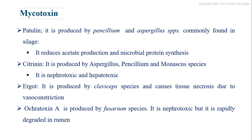Patulin is produced by Penicillium and Aspergillus spp., commonly found in silage; it reduces acetate production and microbial protein synthesis. Citrinin is produced by Aspergillus, Penicillium, and Monascus species and is nephrotoxic and hepatotoxic. Ergot is produced by Claviceps species and causes tissue necrosis due to vasoconstriction. Ochratoxin A is produced by Fusarium species; it is nephrotoxic but is rapidly degraded in the rumen.